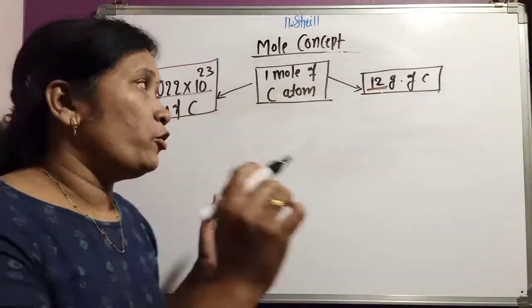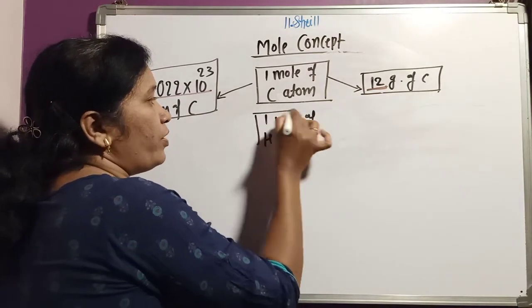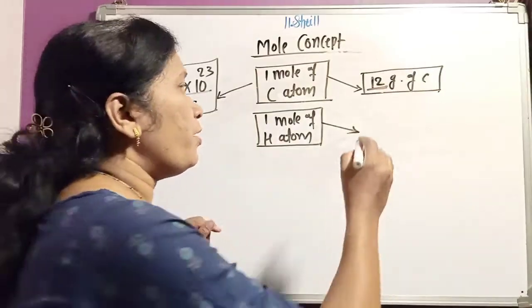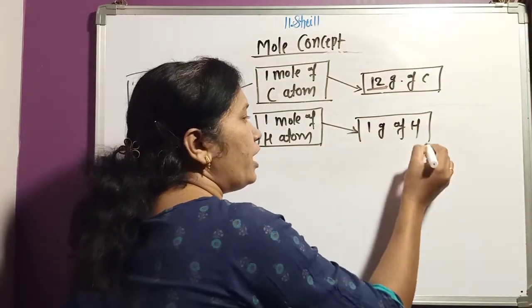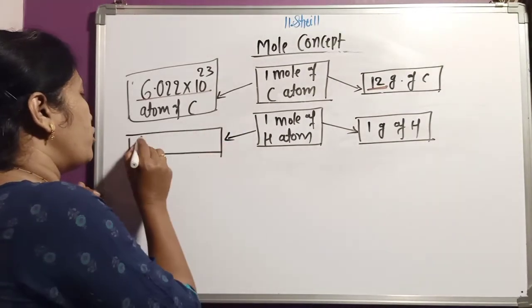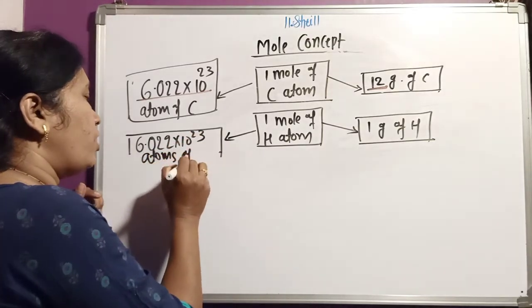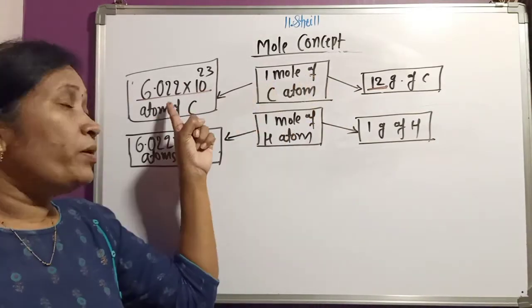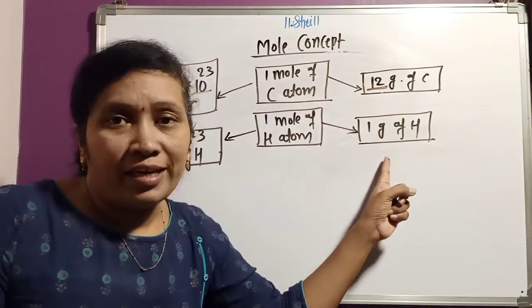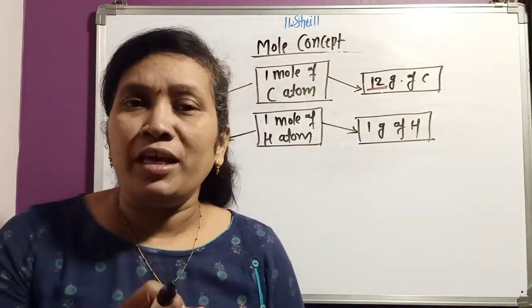Similarly, we can write about hydrogen atoms. If you take 1 mole of hydrogen atoms, you will get 1 gram of hydrogen. And here, obviously this value never changes — 6.022 × 10²³ atoms of hydrogen. Whether you take 1 mole of carbon or 1 mole of hydrogen, you get the same Avogadro's number, but their particular grams are different. The mass quantity changes, but Avogadro's number always remains constant. In any 1 mole of substance, you will get exactly as many atoms as Avogadro's number.